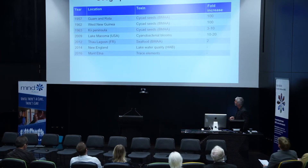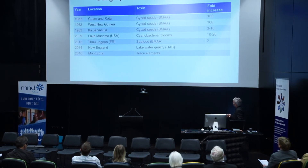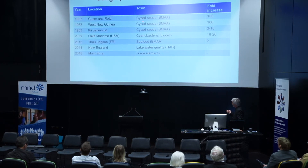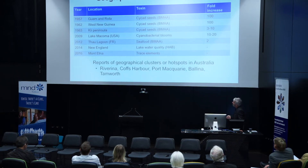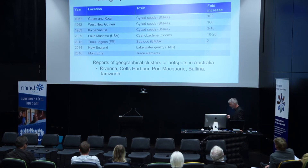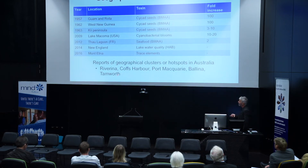I'm going to tell you a little about clusters of MND, because this is something I'm really interested in. A summary paper published about a month ago documented geographical clusters of MND, and most of these have to do with cycad seeds, BMAA, seafood, and algal blooms — which happens to be what I'm interested in. As for clusters in Australia, no one has shown yet that there are any, but if you talk to a neurologist, they'll tell you that in certain areas of Australia they think there could be more people with MND than there should be.